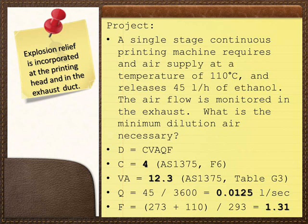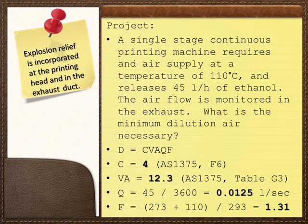The project we are going to look at now is a single-stage continuous printing machine that requires an air supply at a temperature of 110 degrees C and releases 45 litres per hour of ethanol. The air flow is monitored in the exhaust.